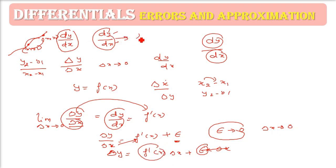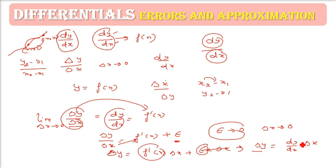Since dy/dx is nothing but f'(x), in place of f'(x) we can write delta y equals (dy/dx) times delta x. This is the whole scenario: if you know the change in x (delta x), then the change in y (delta y) can be computed by dy/dx times delta x. This is the whole scenario of errors and approximation.